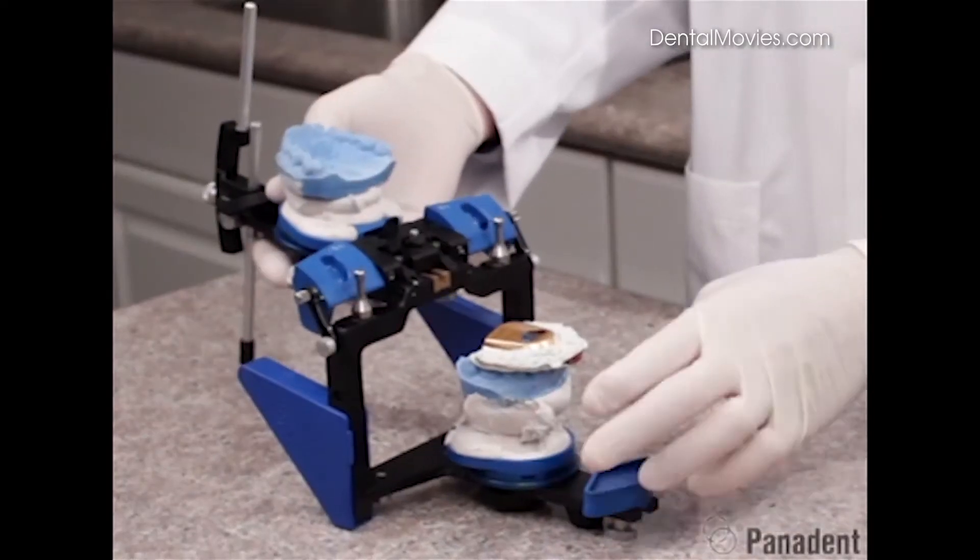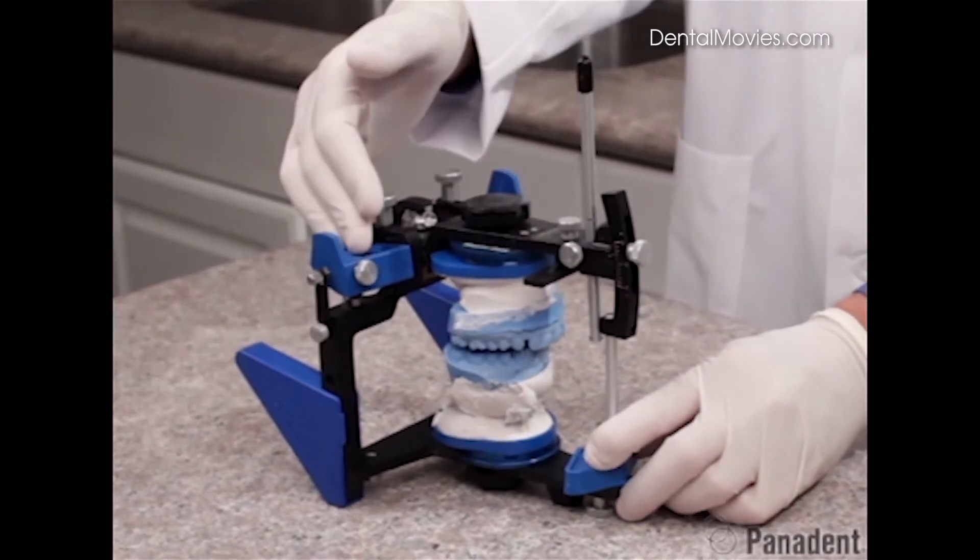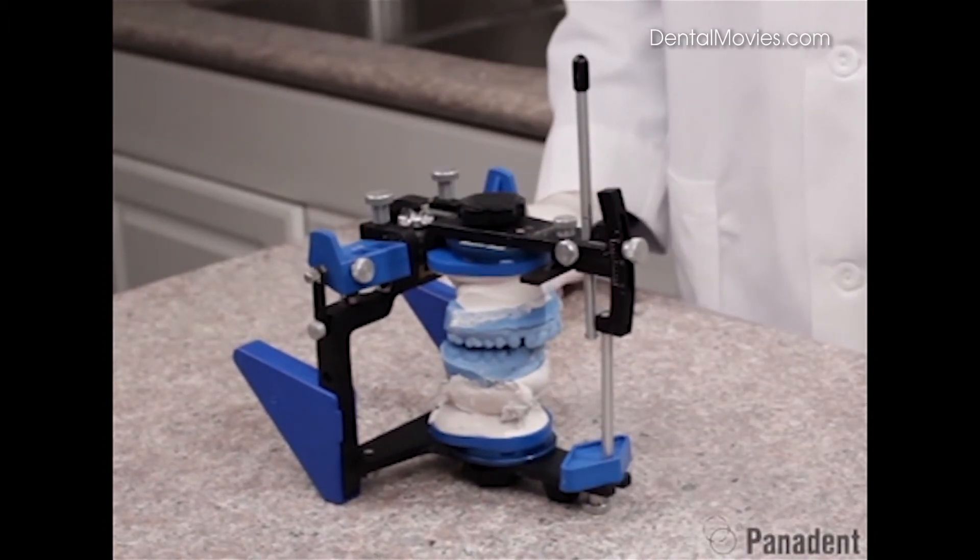We can then open the articulator up to remove the centric relation record. And we can now adjust the protrusive angulation using the protrusive check bite at this time.